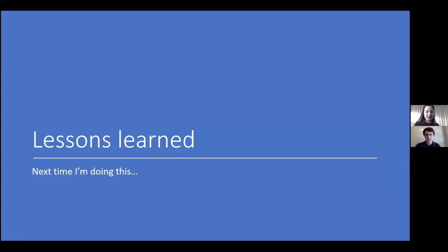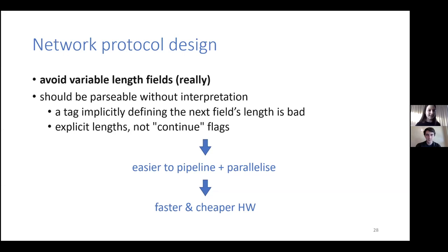And what have we learned from this? So in terms of network protocol design, we have learned that variable length fields are really bad. That was the cause of most of these problems. That was why I was running into timing issues, because writing that parser was really complicated. And another, other issues that I haven't gone into in the presentation, where it should be parsable without interpretation. So for example, a tag that implicitly defines the next field's length is really bad, because then you have to think about, okay, how, what does this mean? Also having lengths explicitly rather than continue flags is a bad idea. So those are some inputs that we passed on to the designers of the SCION protocol. And if you avoid these, you will end up with a protocol that, when implemented, is easier to pipeline and parallelize. And thus it can be implemented in faster and cheaper hardware.